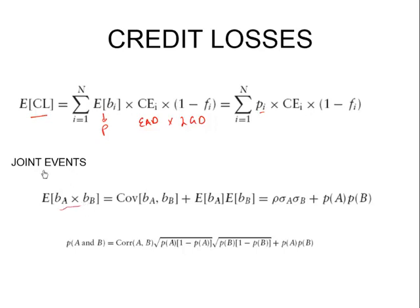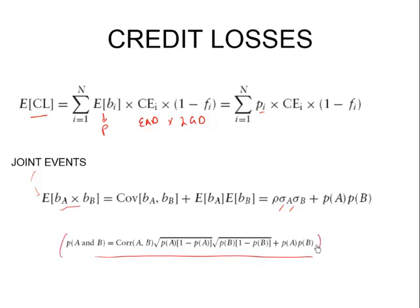As studied in copulas, the probability of joint default — both instrument A and instrument B defaulting together — is: P(A) × P(B) + covariance(A, B). Covariance can be written as correlation × standard deviation of A × standard deviation of B. Being a binomial variable, the standard deviation of A equals √(P_A × (1 − P_A)), and similarly for B. If the correlation is zero, the events are independent and P(A and B) = P(A) × P(B).